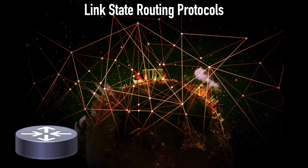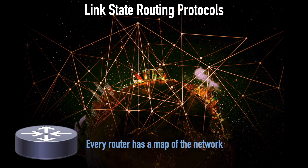For years, I've asked my students what routing protocol they use on their corporate networks, and overwhelmingly the response has been OSPF, Open Shortest Path First. OSPF is one of our link state routing protocols. A link state routing protocol has a map of the network — it knows how each of the routers within an area are interconnected. Unlike EIGRP, which only knows the next hop to a destination, OSPF knows the full topology. Another link state routing protocol to be aware of is IS-IS, Intermediate System to Intermediate System.